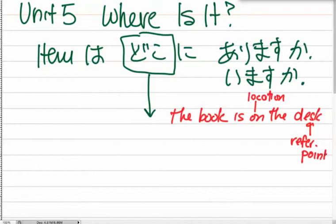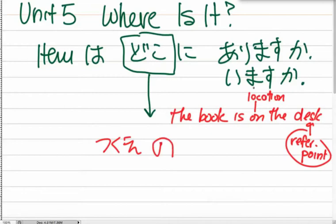Japanese likes to go from most important detail to least important detail, so in this case, the reference point comes first. So we would have tsukue no, then the location comes into play, ue ni arimas.